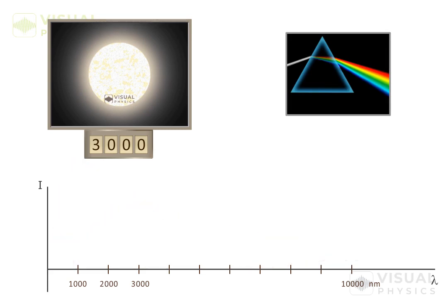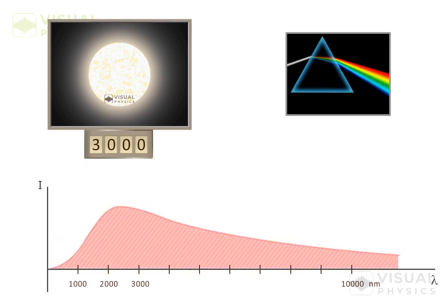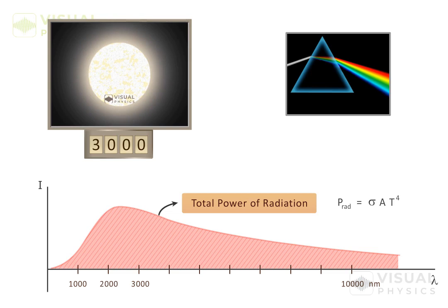Note that area under this curve gives the total power of radiation, which is equal to this term, as given by Stefan's law. So, though the total power of radiation is simply related to the temperature by this equation, the distribution of energy over various wavelengths is not that simple.